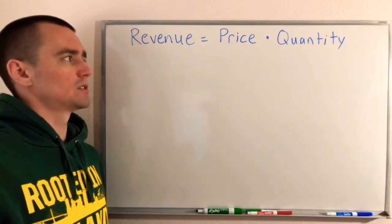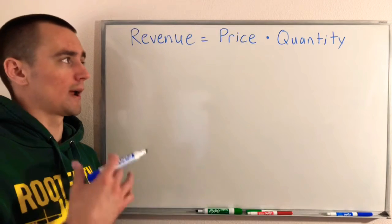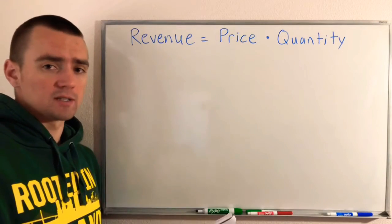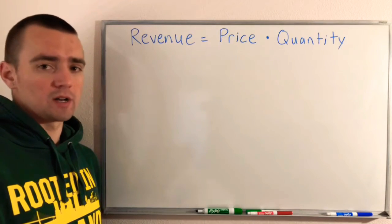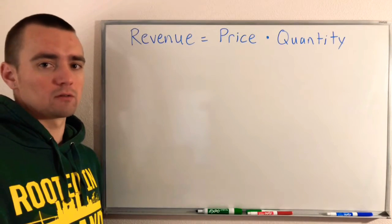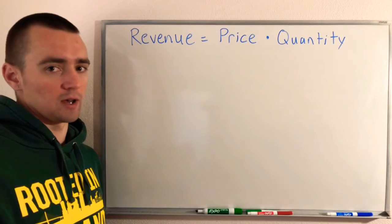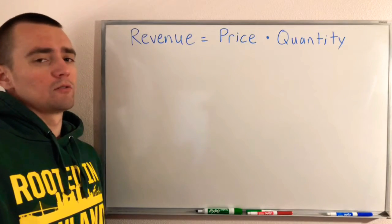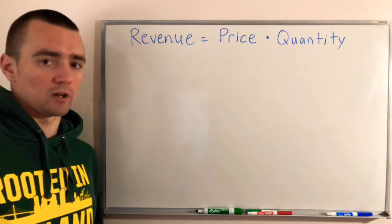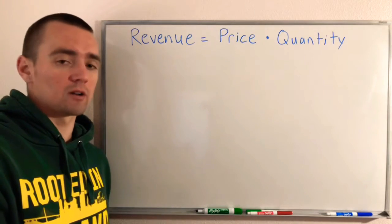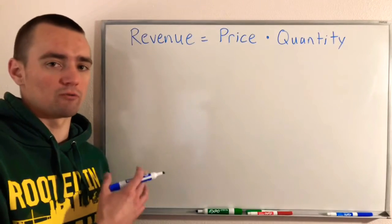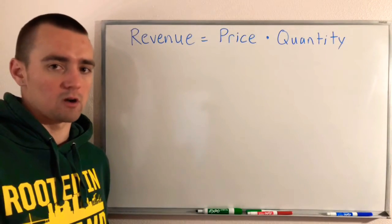In this case, our price is going to be the rent for each apartment, and the quantity is the number of apartment rooms that are being occupied. For each room that's occupied, we're receiving that rent, and the product of those two things, the price times the quantity, gives us our total revenue from this apartment complex.